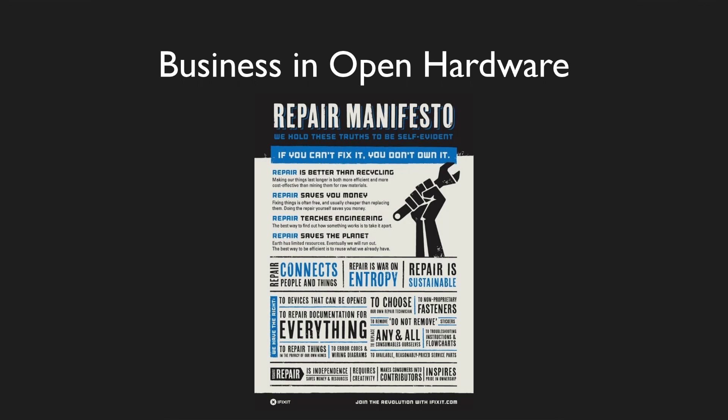There is another company called iFixit that we'll be talking to later today. This is a really interesting model because they don't make open hardware — they make a service. They tell people how to fix their hardware. They give people instructions to fix their dryer, their dishwasher, or their phone screen. They are basically selling confidence to fix your own device.